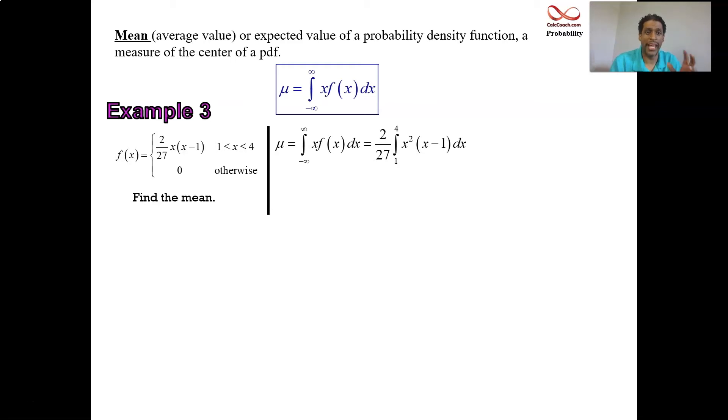And so we only integrate from one to four. And so we have x, but now times x times quantity x minus one gives us x squared. Maybe I should have color coded that so you could see it, but it's x times the function which is x quantity x minus one. I've pulled the two over 27 out, but it's basic integration here. You'll have an x cubed which will integrate to x fourth over four. You'll have an x squared which will integrate to x cubed over three. You put the four in, you put the one in, work out these details for yourself. My advice is to pull a 64 out of that first parentheses, it'll make the fraction arithmetic a little better. And you'll see that the final answer is 19 over 6, that's the mean.